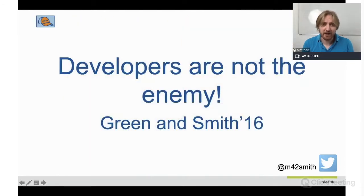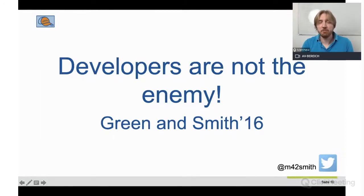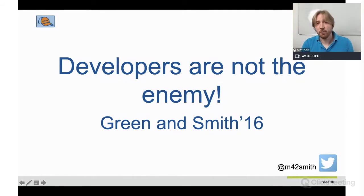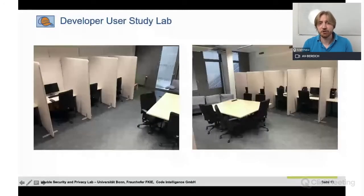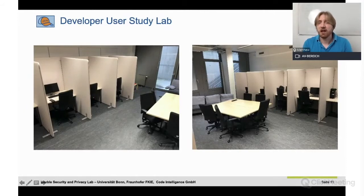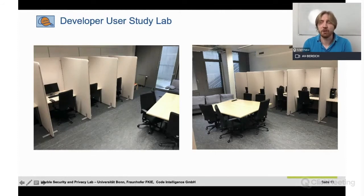Our slogan is: developers are not the enemy. While we are almost always dealing with mistakes made by humans, we don't blame the developers or the end users. We need to make technology adapt to humans and not the other way around. For that, usable security and privacy research gets people into the lab, sits them down at a computer, gives them programming tasks and security tools, and we look at how they use them. Nowadays we do everything online.